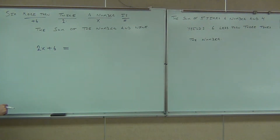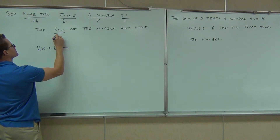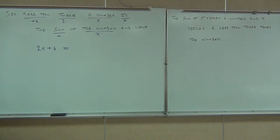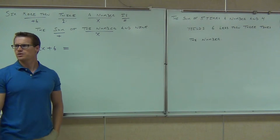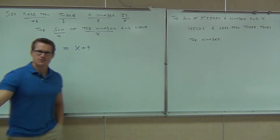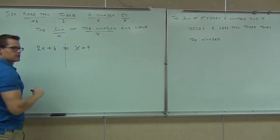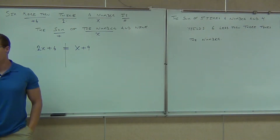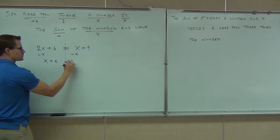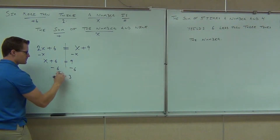The second expression is 'the sum of the number and nine.' Sum means plus. Of the number — we've got to use x there — and nine. So 'the sum of the number and nine' — which comes first, x or nine? X. So x plus nine. So our full equation is two x plus six equals x plus nine. What is the lower variable? Two x, so we'll subtract x. We get x plus six equals nine. Last step, we subtract six from both sides. x equals three, and we are done.